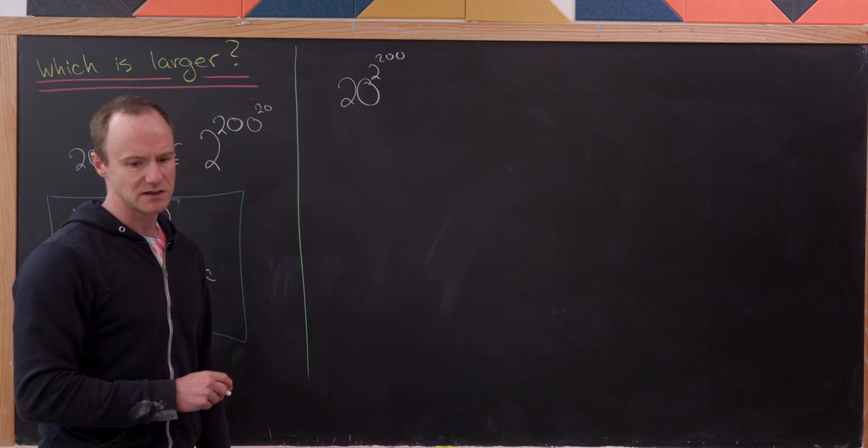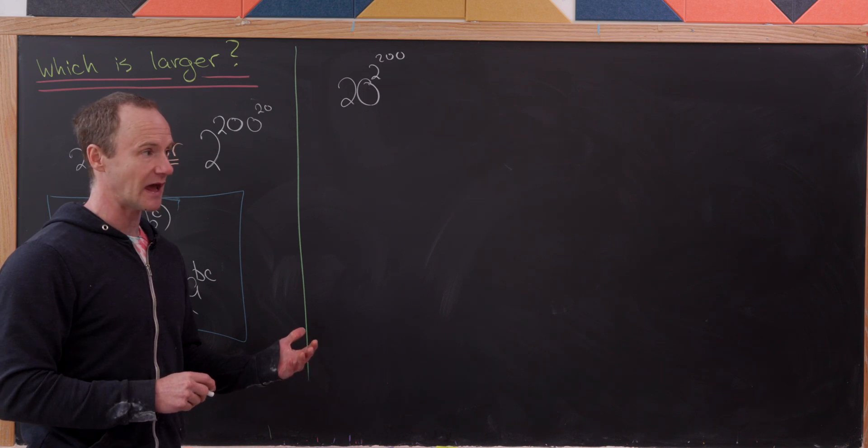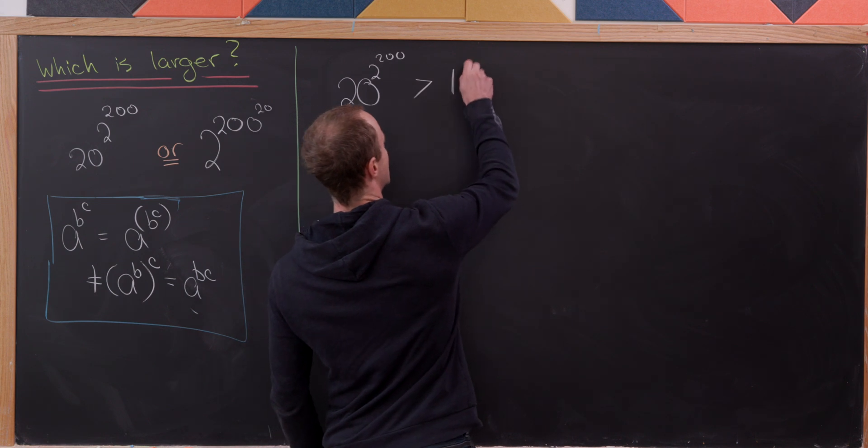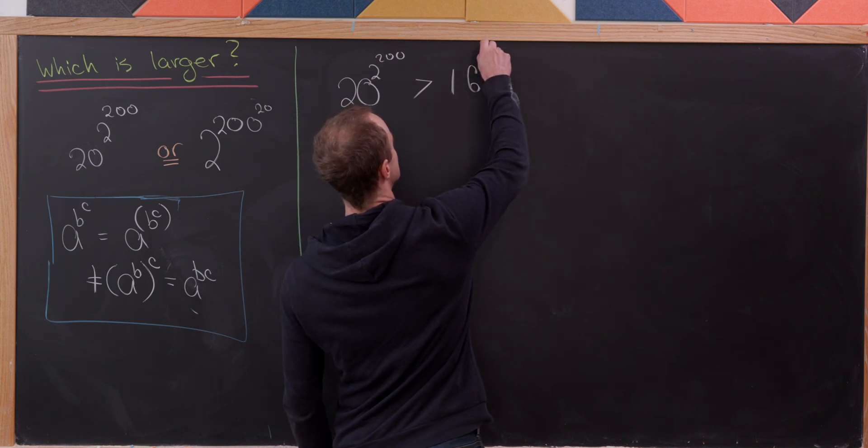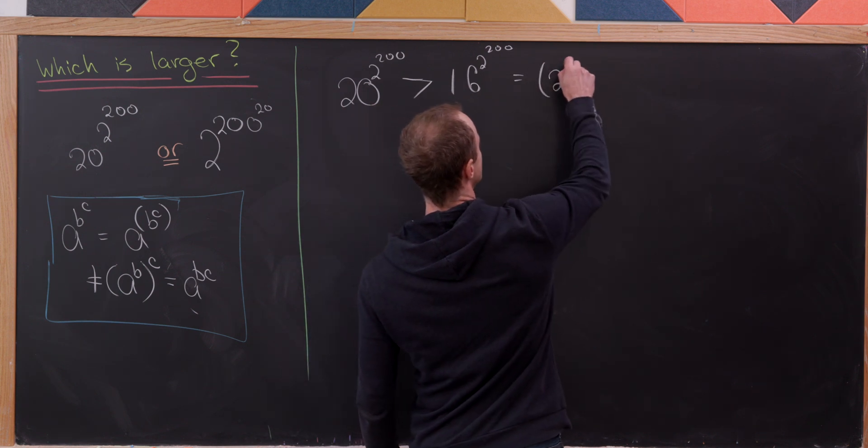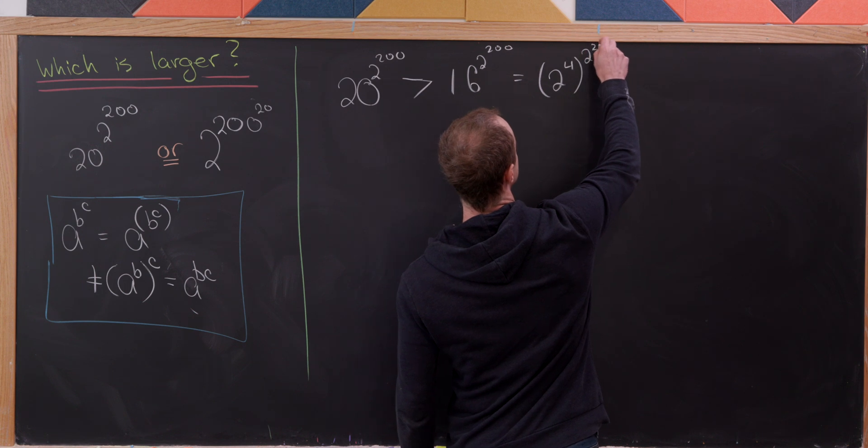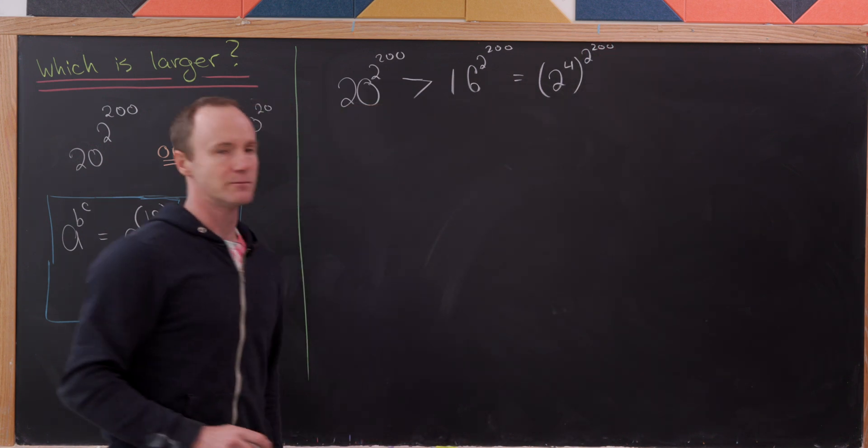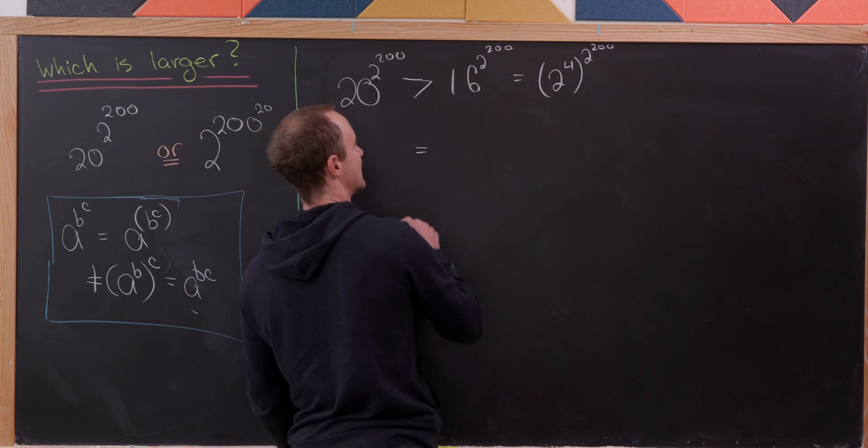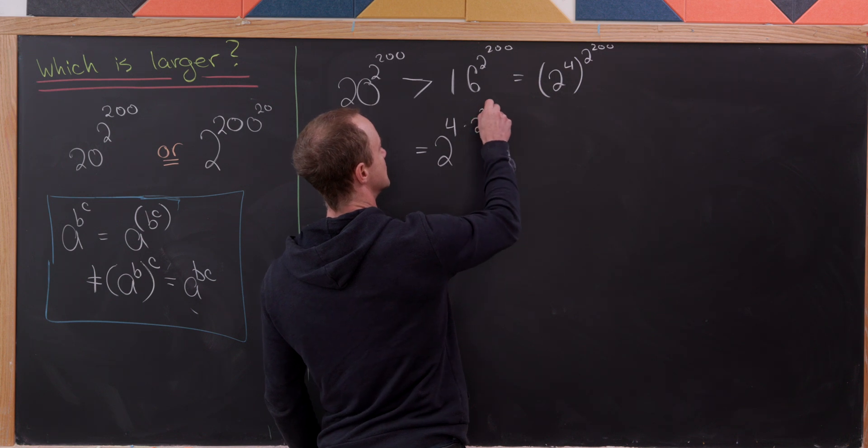Okay, so keeping that in mind, we might do something like this. We might replace 20 with 16 and push the inequality in the appropriate direction. So this is going to be bigger than 16 raised to the 2 to the 200. But now I can write 16 as 2 to the 4th power, which is now raised to 2 to the 200. But now I can take that 2 to the 4 and apply exponent rules. So multiply the exponents. That'll give us 2 to the 4 times 2 to the 200.